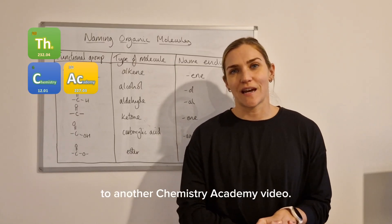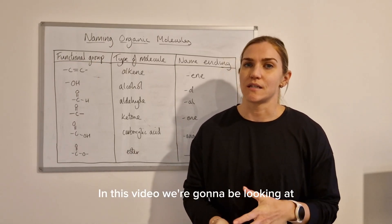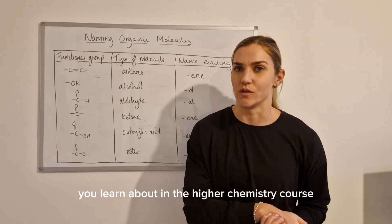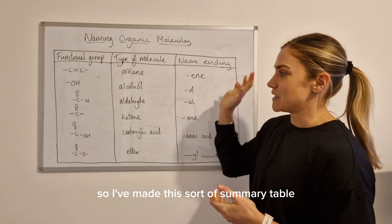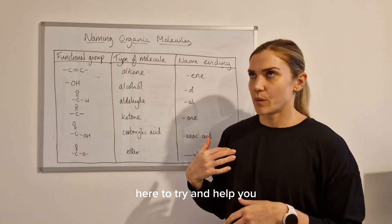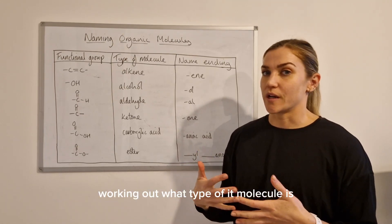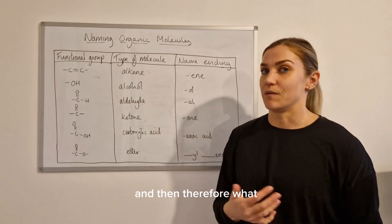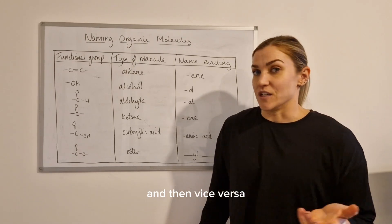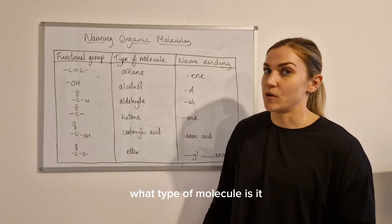Hello and welcome back to another Chemistry Academy video. In this video we're going to be looking at naming carbon-based molecules that you learn about in the Higher Chemistry course. I've made a summary table here to help you when you look at a molecule, working out what type of molecule it is and therefore what the name ending would be, and vice versa — if you're given the name of a molecule, based on the ending, what type of molecule is it.